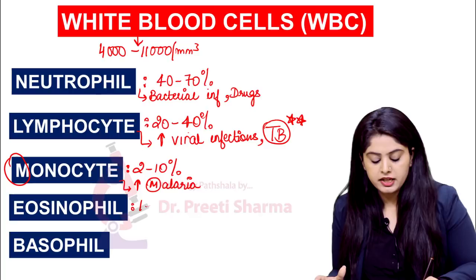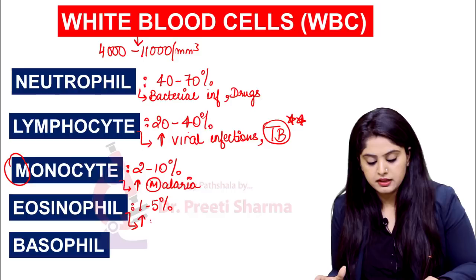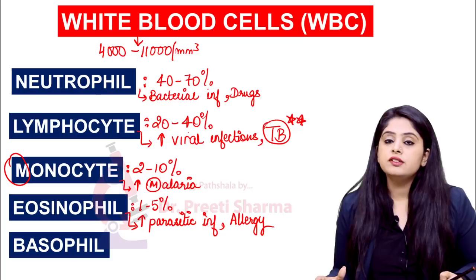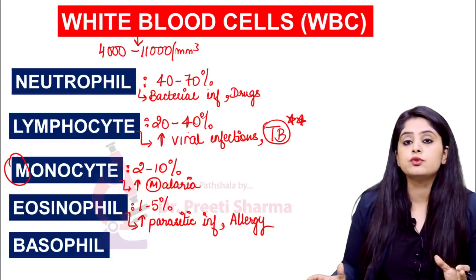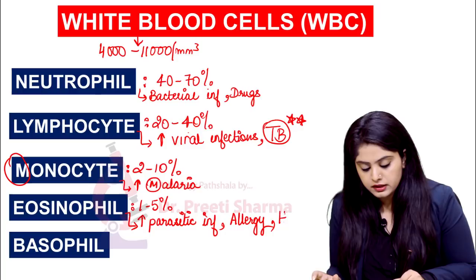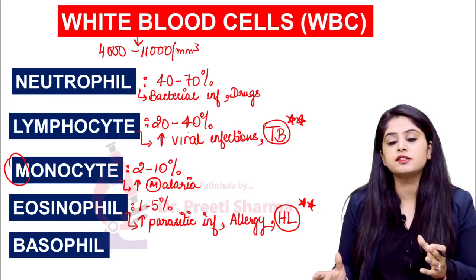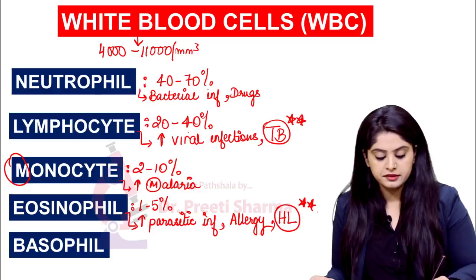Next comes eosinophil. The normal eosinophil range is 1 to 5 percent, and eosinophils are increased in parasitic infections — very important. They are also increased in allergies. Recall type 1 hypersensitivity — the hypersensitivity related to allergies shows an increase in eosinophils. Also, certain lymphomas: Hodgkin's lymphoma has a background showing eosinophils. So if someone asks whether eosinophil increase can be seen in a tumor — yes, in Hodgkin's lymphoma there is an increase in eosinophils.